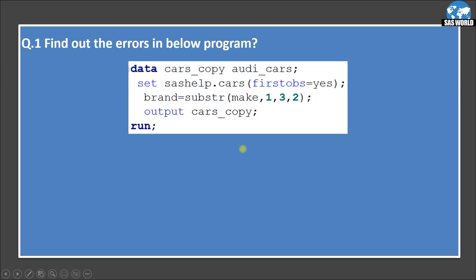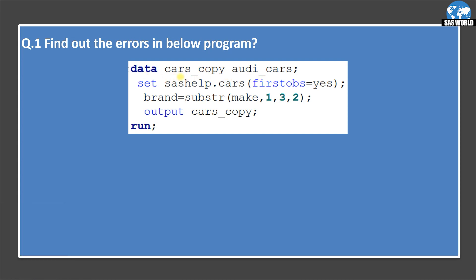Let's move on to the first question: find out the errors in the below program. Here we are creating two datasets — cars_copy and od_cars — then using the sashelp.cars dataset as the input dataset with firstobs equal to 'yes', creating a new variable called brand using the substr function, then using an output statement and writing the output to cars_copy dataset and not writing anything to od_cars. You need to find out where the error is.